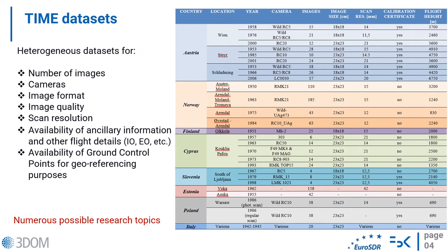Time data sets are very heterogeneous in terms of number of collected and shared images, taking cameras, image quality and format, scan resolution used during their digitization, but also for the availability of ancillary information and further details about the flight mission — for example, the interior and exterior camera parameters, but also the availability of ground control points necessary for georeferencing image blocks. In different cases and for several locations, multi-temporal series are also provided for widening the possible research investigations.